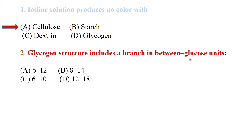Glycogen structure includes a branch between glucose units. In glycogen, the number of glucose units between branches may be 8 to 14, 6 to 10, 12 to 18, or 16 to 12. The best answer is 12 to 18.